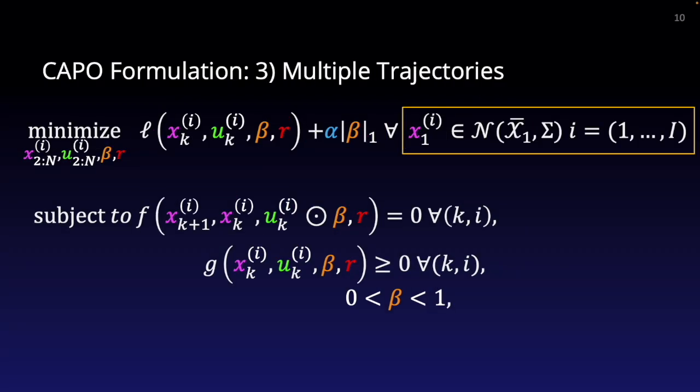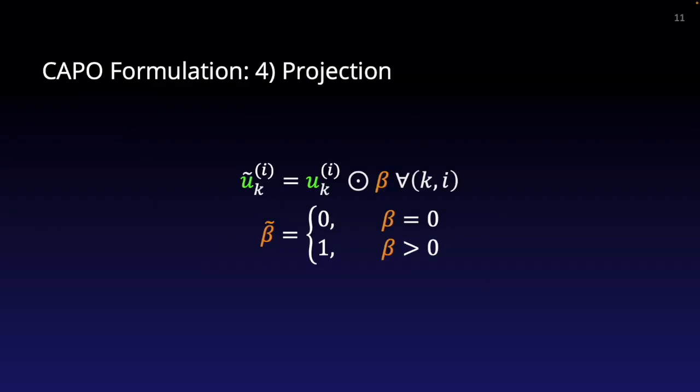Simultaneous optimization across multiple sample trajectories for robust design. A straightforward feasibility projection function to generate valid solutions for the original mixed integer problem, eliminating the need for extensive branching, commonly required in solving mixed-integer problems.